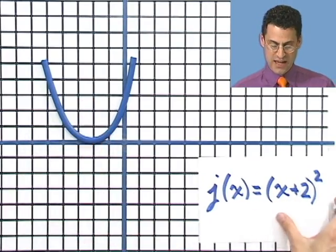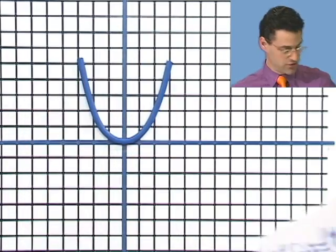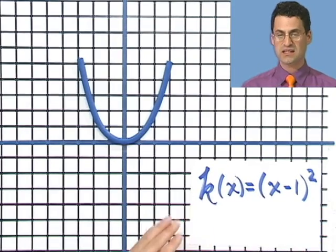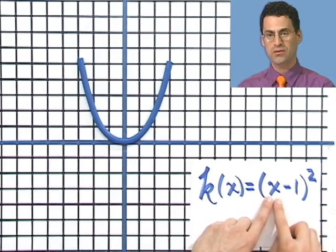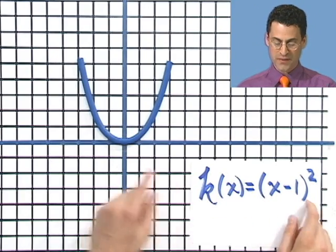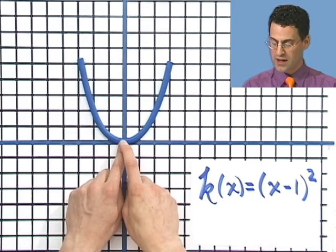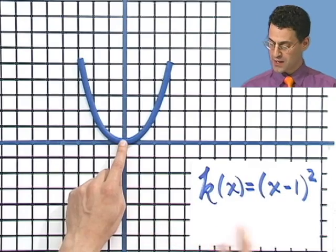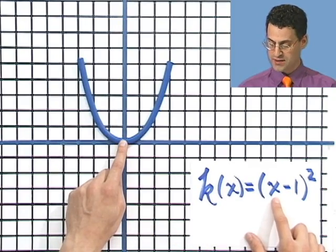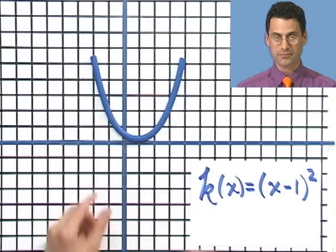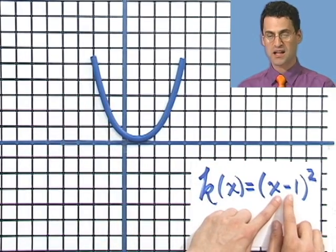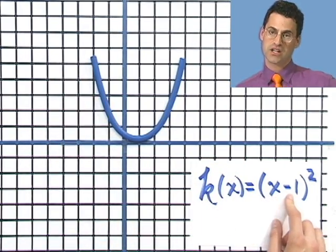Now what about when you see an x minus something? What's your guess? Shift to the right is absolutely correct. k(x) = (x - 1)². That's a shifting of the x value. And since it's x - 1, that means instead of (0, 0), I'm going to have (1, 0). By putting 1 here, I get 0. So I shift 1 unit over this way. So when I see a minus sign with respect to the x, I shift always to the right.